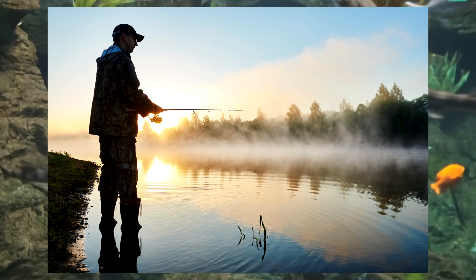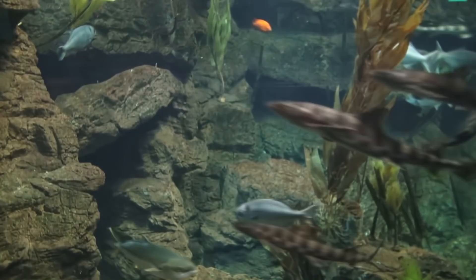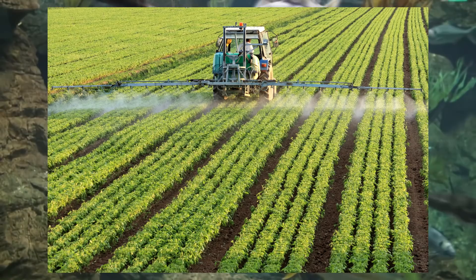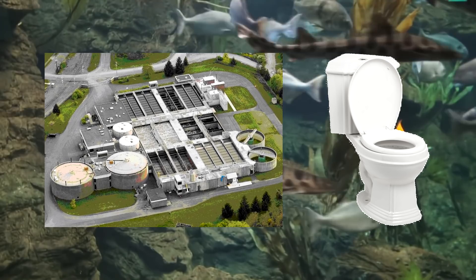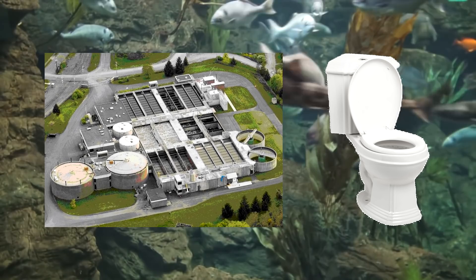There are steps that we can take in order to decrease the size of the dead zone. As humans, we can use fewer fertilizers and control animal wastes so that fewer nutrients enter the waterways. In addition, we can monitor septic systems and sewage treatment facilities, and take more care in industrial practices in order to reduce the amount of nutrients entering the waterways.